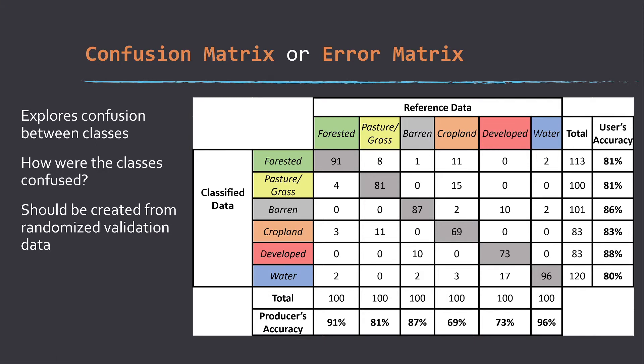One thing nice about the confusion matrix is once it's generated, there's lots of metrics that you can calculate from it to get a sense of overall performance and class-level performance and where the sources of confusion lie. In this example, we can see just by looking at the numbers that there seems to be some confusion between cropland and pasture. We can see 15 missed samples there, 11 missed samples there.